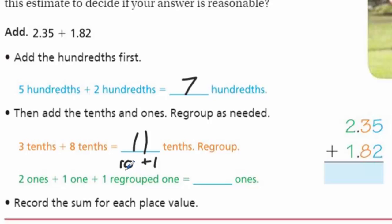That says add the hundredths first. Okay, we have five hundredths plus two hundredths. That's going to equal seven hundredths. Cool. So far, so good. Then it says to add the tenths and ones, regroup as necessary. We have three tenths plus eight tenths. Well, looking at the tenths, I see the three and the eight tenths. That's going to equal eleven tenths. But that's a problem, right? We need to regroup. We need to regroup because we have more than nine.